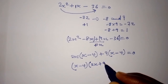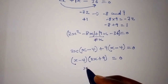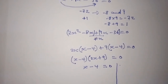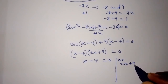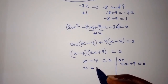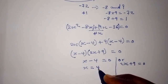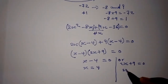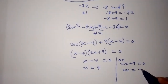Now (x minus 4) is common, so we can write (x minus 4)(2x plus 9) is equal to 0. From here, x minus 4 equals 0, so x equals 4. Or 2x plus 9 equals 0, so 2x equals negative 9, giving x equals negative 9 over 2.